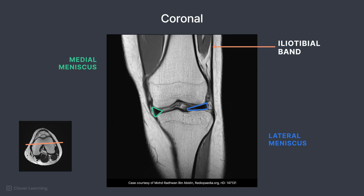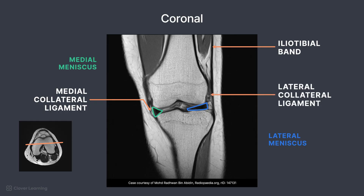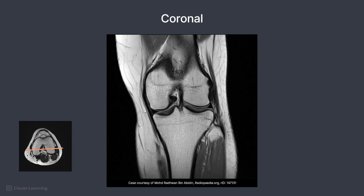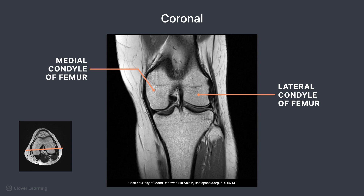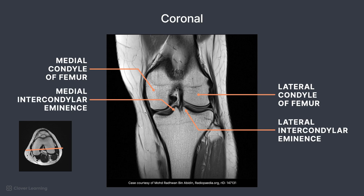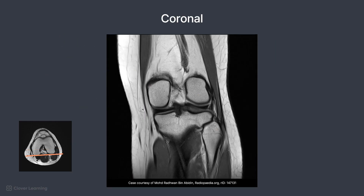On the lateral side, the iliotibial band is seen starting at the tibia and extending upward. On the medial side, the medial collateral ligament and a portion of the lateral collateral ligament are demonstrated. This particular slice shows the medial and lateral intercondylar eminences are easily identified. The anterior cruciate ligament and posterior cruciate ligament are seen in the intercondylar fossa. On the final slice, the fibula is demonstrated and the dark menisci providing cushioning for the joint are seen.